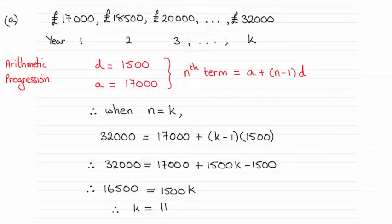Hi there. Now for this question we had to find the value of K, the year in which Jess's salary was £32,000. And you can see the answer turns out to be K equals 11.